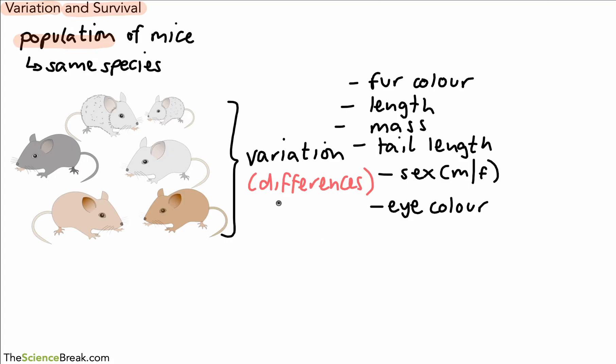Now this variation happens for one of two reasons. The variation could be inherited, in other words from the parents through the DNA through the genes, or it could be because of the environment. It could be the environment that causes a particular characteristic. So if we use the letter I for inherited and E for environmental, we could decide which one of these characteristics are.